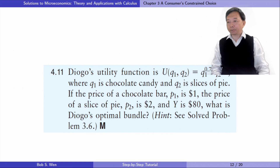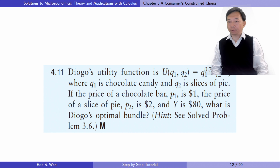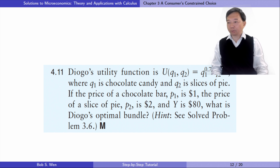Let's solve exercise 4.11. The consumer's utility function is as follows. Q1 is chocolate candy and Q2 is slices of pie. If the price of a chocolate bar, P1, is $1, the price of a slice of pie, P2, is $2, and income Y is $80, what is the consumer's optimal bundle?